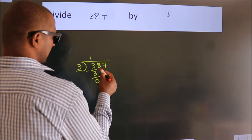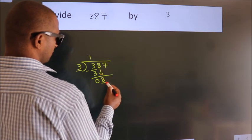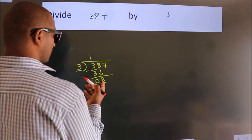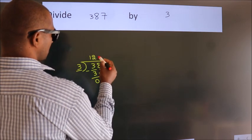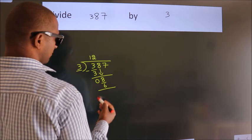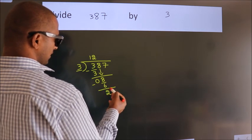After this, bring down the beside number. So, 8 down. A number close to 8 in 3 table is 3 2s, 6. Now, we subtract. We get 2.